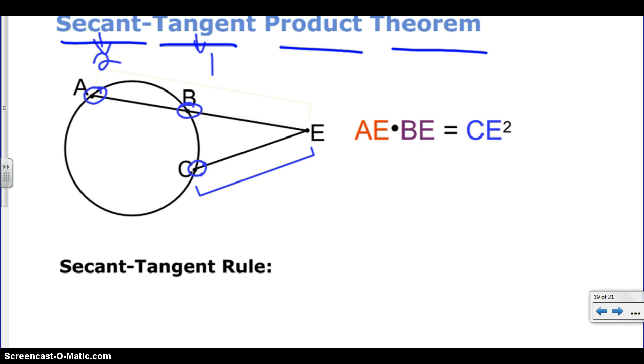Let's recap real quick. Secants intersect the circle at two points, as well as go through the circle to an outside point, which in this case is E. Tangent touches the outside circle at one point, but does not go through the circle, and it extends out to a point E.